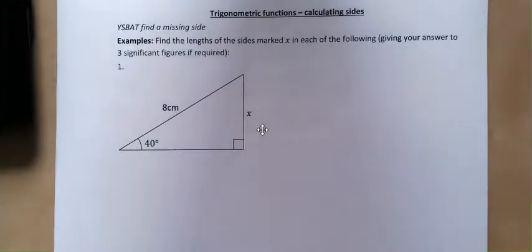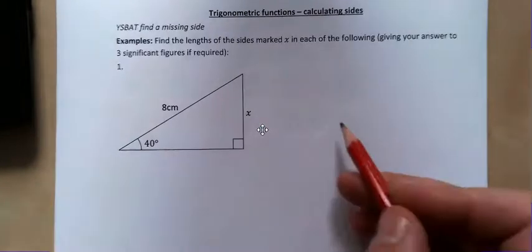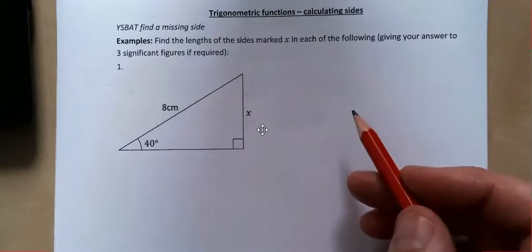This is year 10. We're in unit 6 and we're doing some trigonometry. So the last video was finding the angle. Now we're going to be calculating the sides. There's a bit of algebra and rearrangement involved here. So let's make sure we're all over that.